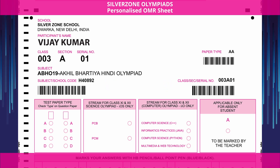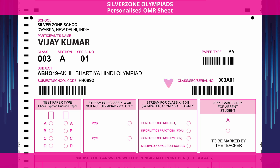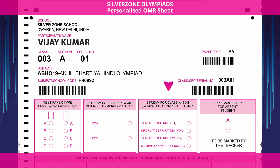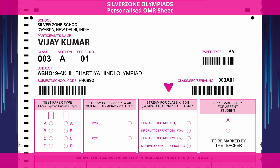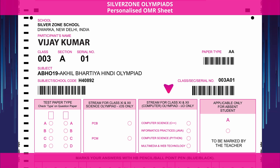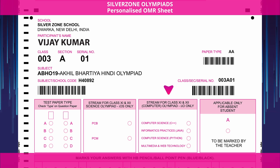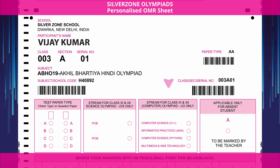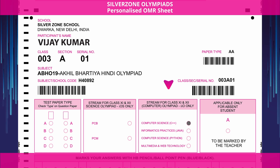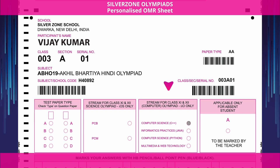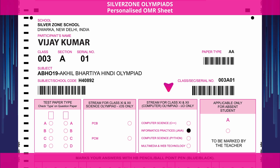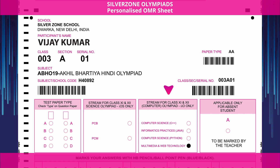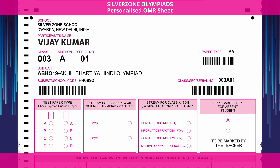The third box will only be filled by the students of class 11th and 12th who are participating in the International Informatics Olympiad. Highlight the circle corresponding to the section opted by you, as given in the question paper.